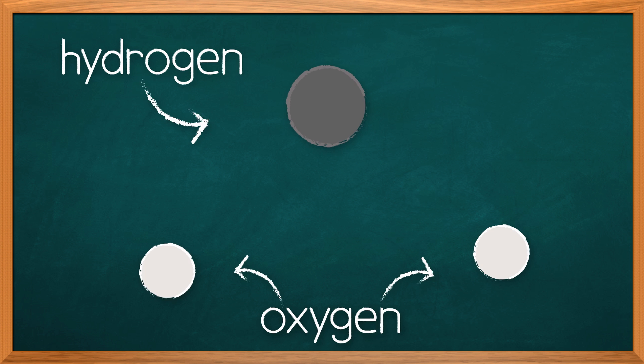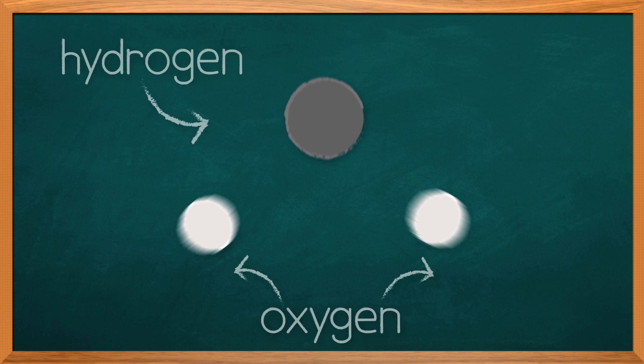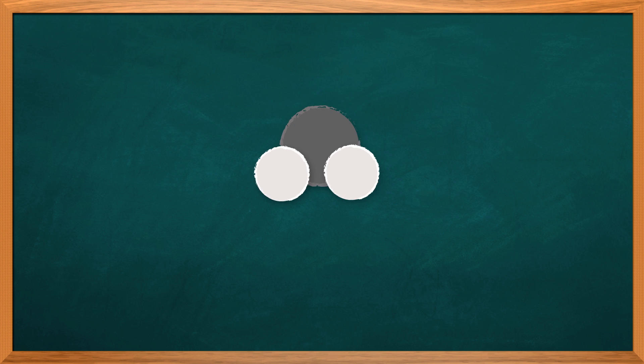Compounds are made up of different elements bonded together in specific proportions so that they can't be mechanically separated. It takes a chemical reaction to sort out, for example, the oxygen from the hydrogen in water. When you mix a compound with other stuff, you can set off that reaction. And as the atoms rearrange themselves, they'll either absorb or release energy.